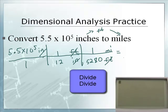And feet to feet. So now this is both on the bottom. So 5.5 second EE. Don't forget the EE. Five. We're not using the times, we're not using the 10, we're not using the carat. Second EE. 5.5 second EE 5 divided by 12 divided by 5,280. Enter.